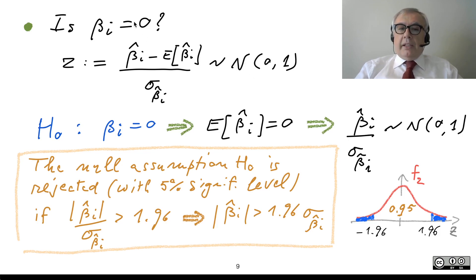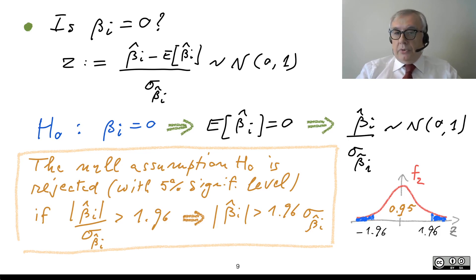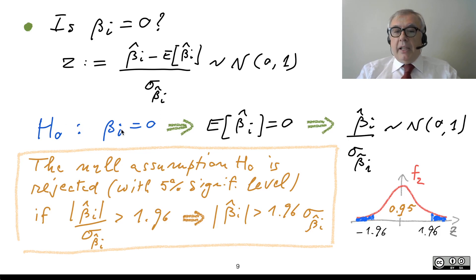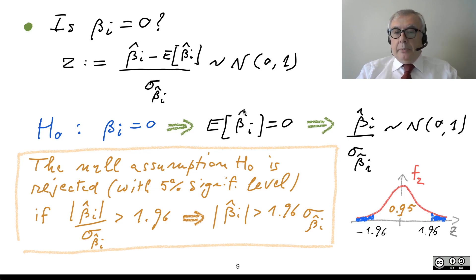In order to take a decision about whether beta-i equals zero, we formulate the null hypothesis — in this case, that beta-i is actually equal to zero. If the true value equals zero, then the expectation of beta-hat-i equals zero because beta-hat is an unbiased estimator.